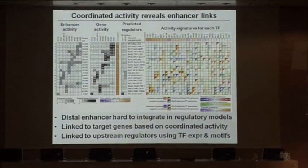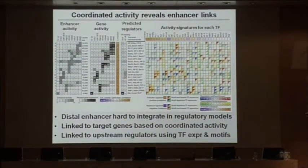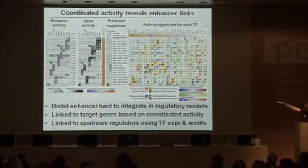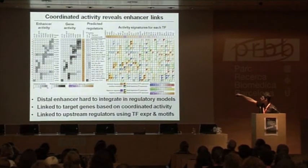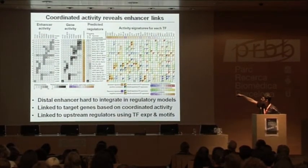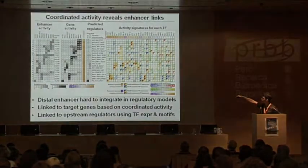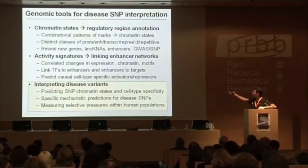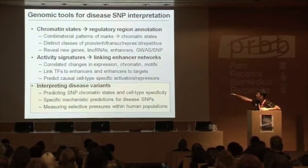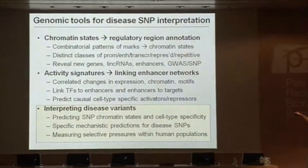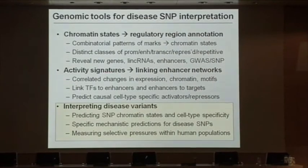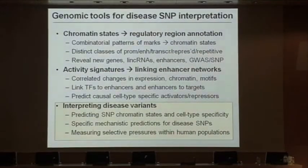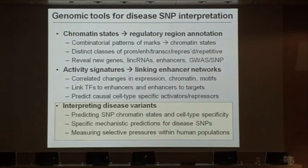So just to summarize, what we end up with is clusters of enhancer activity across the different cell types — some 20-plus clusters of enhancers that show the same activity pattern, inactive in some cells, active in others. We've now built this arsenal of tools: chromatin states to discover combinations of marks, activity signatures linking enhancers to transcription factors upstream and to their target genes downstream.